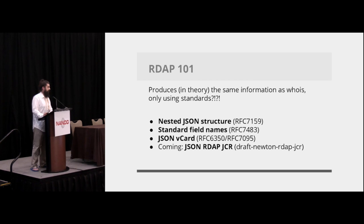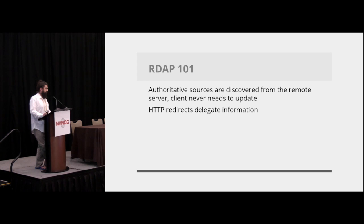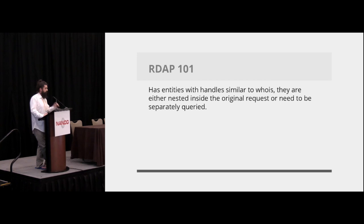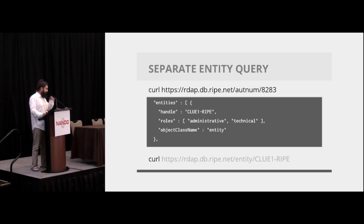RDAP is all peer-reviewed through the IETF — there are RFCs and drafts coming. So instead of doing a free-form ASCII thing where every RIR can do their own thing, it's discussed, it's standardized. There's one server to go to so you don't need client-side hacks. You can go to any of the servers and they're all required to redirect you to the correct one. For example, I can request information on an ARIN AS from RIPE and RIPE will send me to ARIN and vice versa. It's simple JSON — you can curl and get a huge JSON dictionary. It also has entities: when you query a handle to get more information, it has the same concept. RIPE does not nest entities and ARIN does, so the entity gives you all the information on a person or organization.